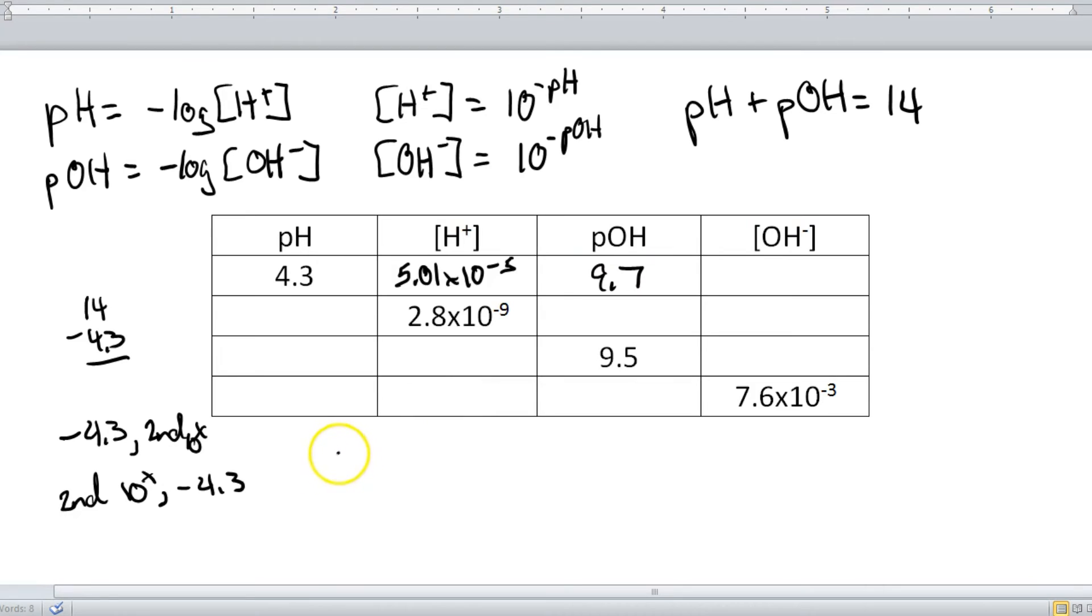So what I will do in my calculator, since mine requires a number first, I will type in negative 9.7, then I'm going to hit second 10 to the x.